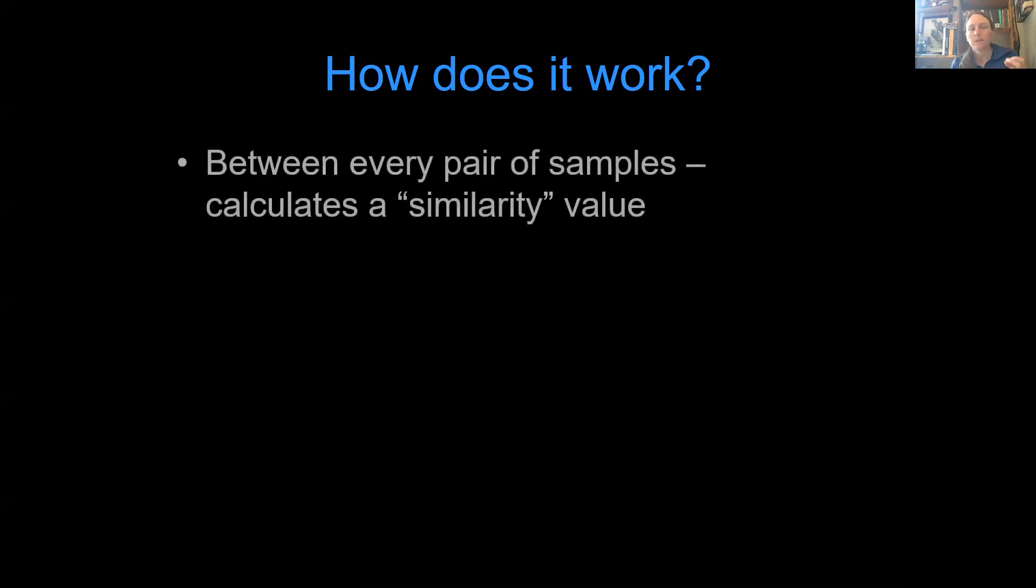So that's kind of what ordination does. It gives you this cool picture and then some statistics that go with it to test the hypothesis, the null hypothesis that all communities are the same. How does it work? Basically ordination takes every pair of samples in your data set and calculates a similarity value. And there's a number of different similarity indices that can use. But think about it, I like to think about it kind of like the distance between two cities and how you could calculate the distances between two cities.